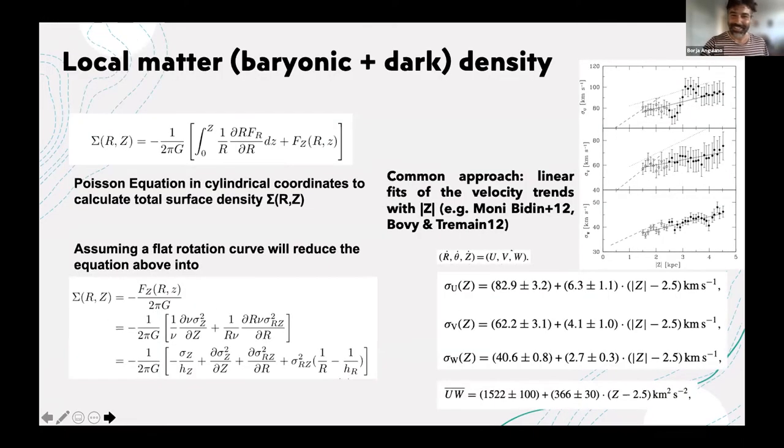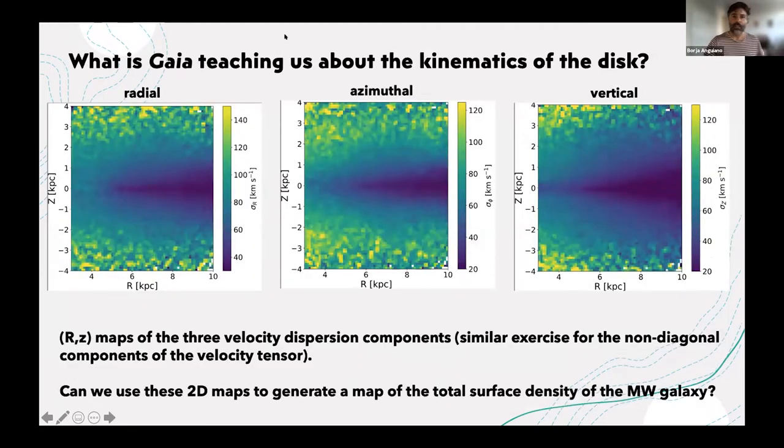This is what Gaia is telling me about the kinematics, about the velocity dispersion in a two-dimensional diagram of vertical height. Color coded by velocity dispersion for the radial, azimuthal and vertical components. I can generate the same kind of maps for the non-diagonal components of the velocity tensor. Can I use these two-dimensional maps to generate a map of the total surface density of the Milky Way galaxy? This is my goal.